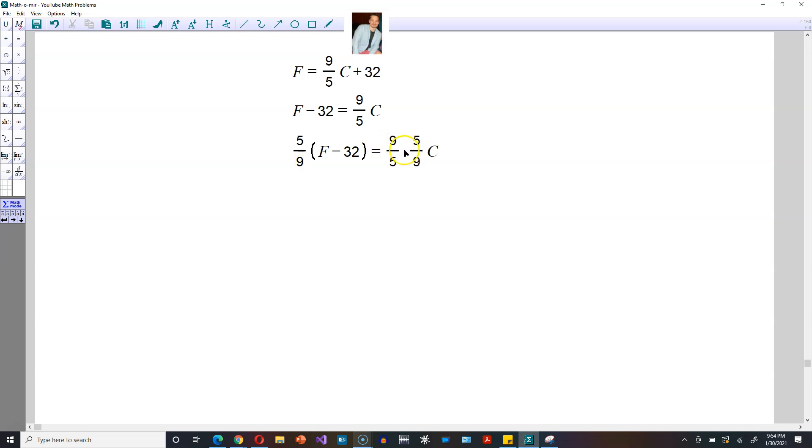Here, because these are reciprocals, in other words, this 9/5 would cancel off with this, which means what you have then is the following: 5/9, and then here within parentheses, you have F minus 32 is equal to C.